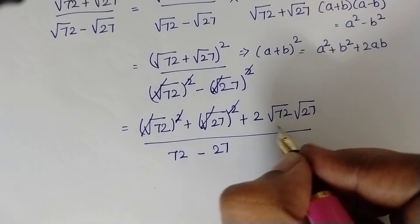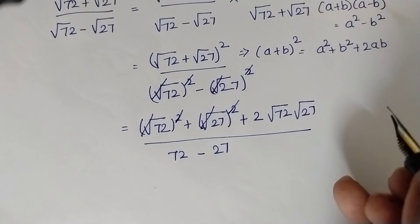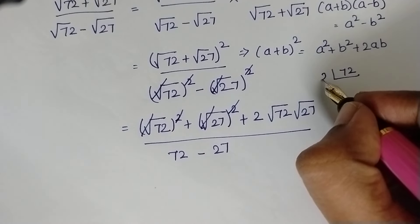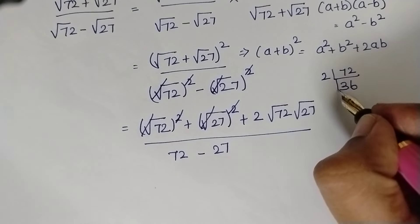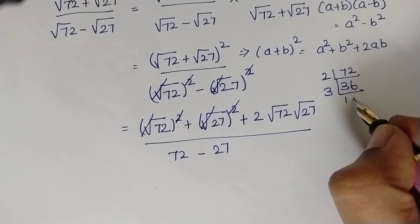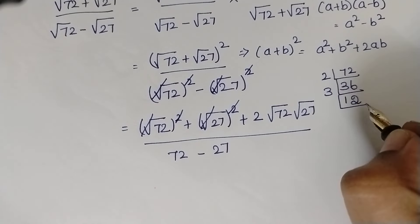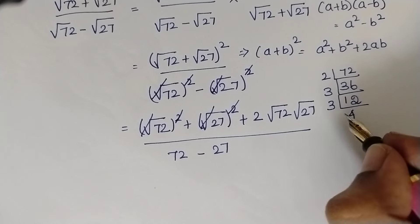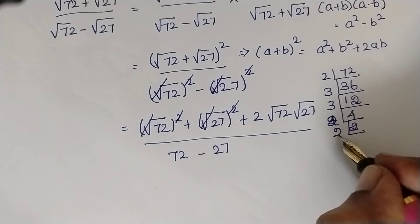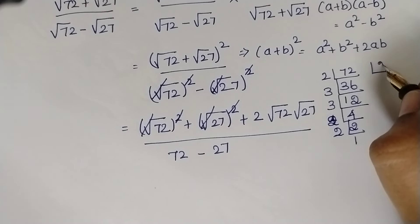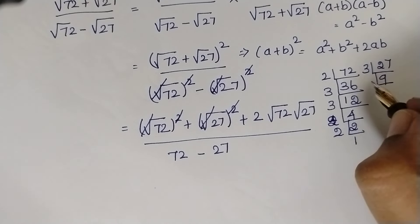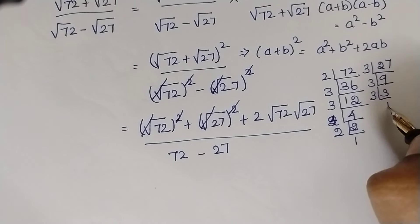Here the root and square get cancelled. Now we need to find the common factors of these numbers in order to take the square root. For that, I'm going to take 72 and do L-division. 72 comes in the 2 table: 2×36, 36 comes in the 2 table: 2×18, 18 comes in the 2 table: 2×9, 9 comes in the 3 table: 3×3. For 27: 3×9, 9 = 3×3, leaving 3×1.